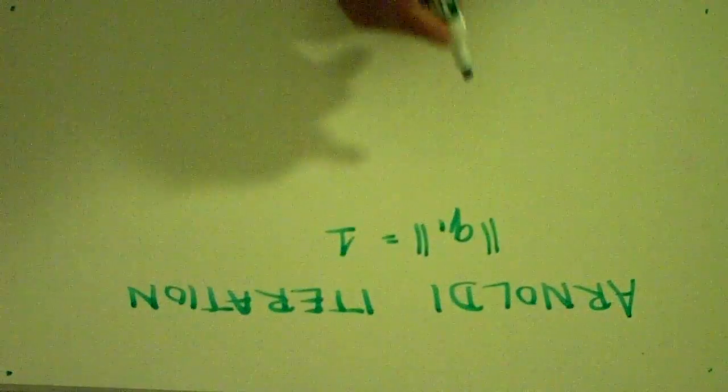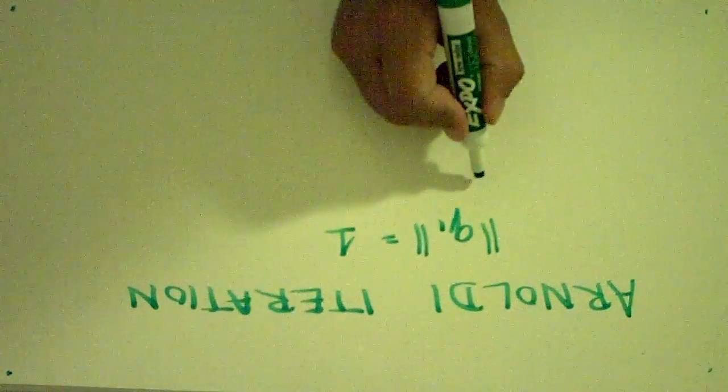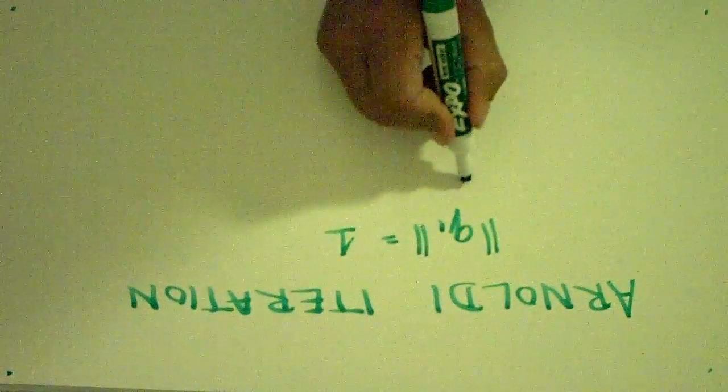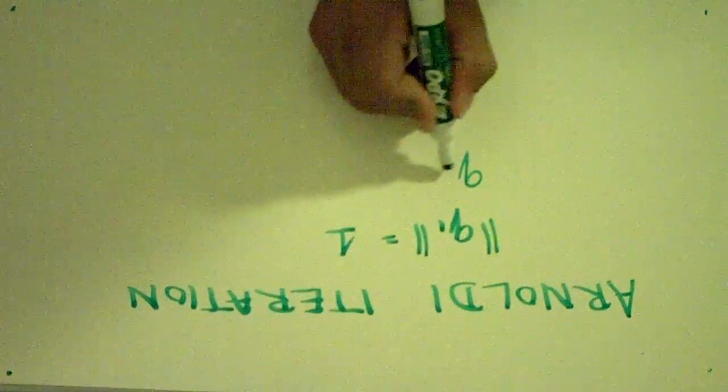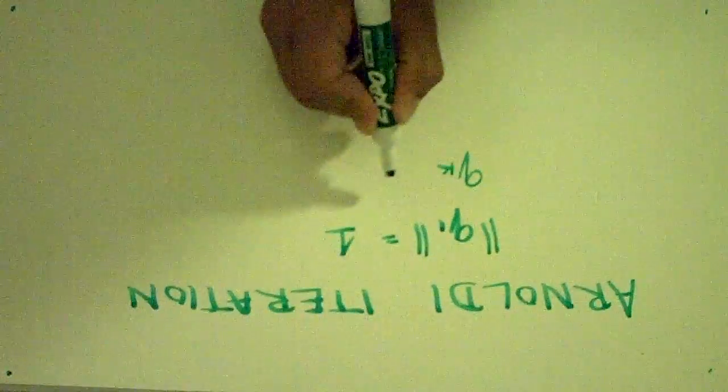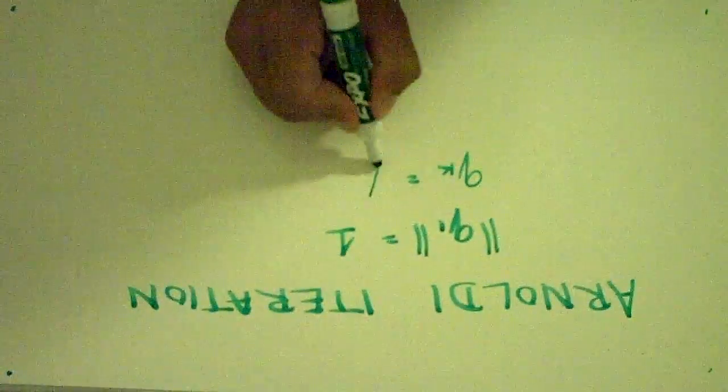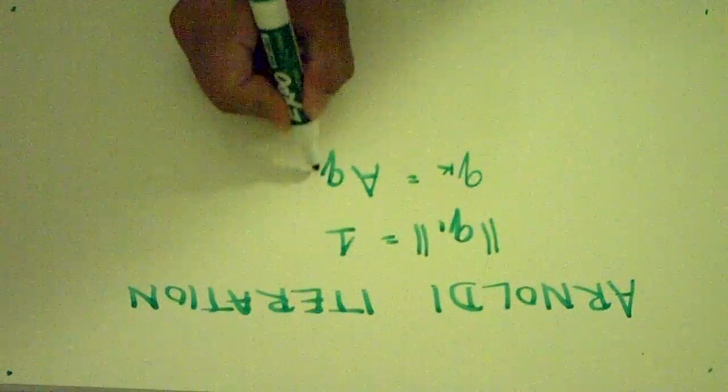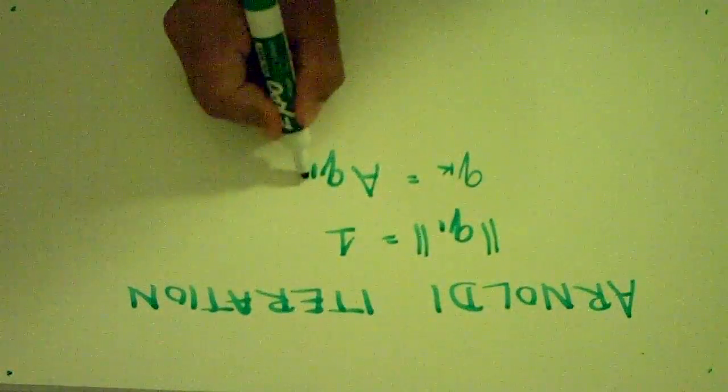Then, we repeat for QK through QN. We take Q2 as equal to the next power iterate, which would be A times Q1, or QK minus 1.